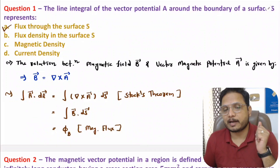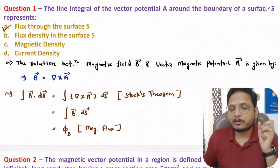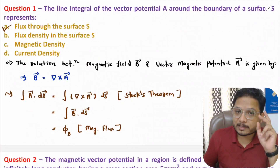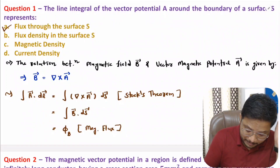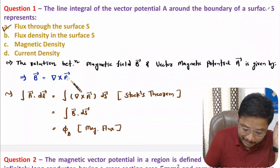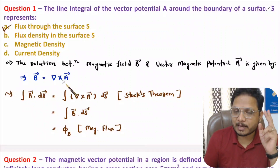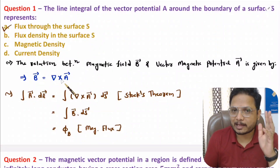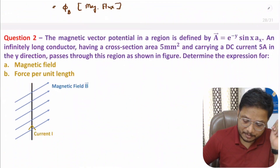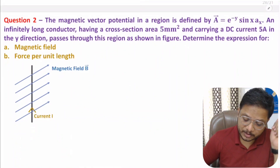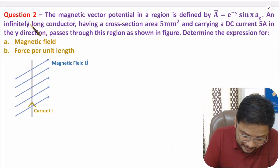So option A is correct. One should know the basic relation between magnetic field and vector magnetic potential: B equals del cross A. Now I will solve the second question.